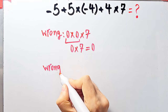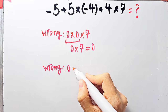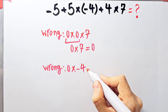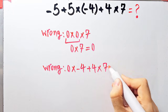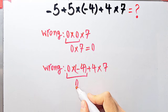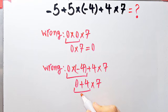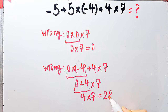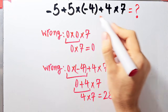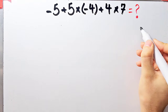Other people solve it like this: negative 5 plus 5 equals 0, then 0 times negative 4 equals 0, 0 plus 4 equals 4, and 4 times 7 equals 28. They say the final answer equals 28 — but this answer is definitely wrong.